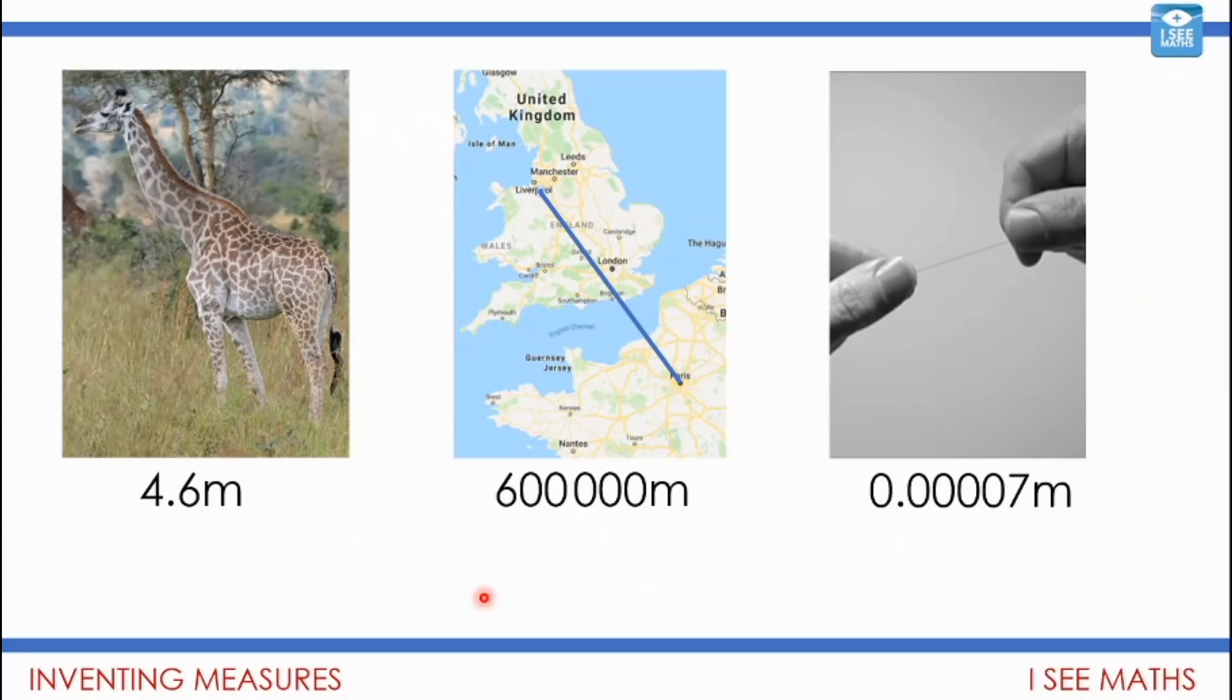Let's say if I was to measure a giraffe. A giraffe, an adult giraffe, might be 4.6 metres tall. Or if I was to measure the distance from where I live to Paris. That's about 600,000 metres. Or the width of a piece of thread. Now that is 0.0007 metres thick. What's wrong with that? What's wrong with doing that? Pause the video. Why can't I just measure everything in metres and describe everything in metres?